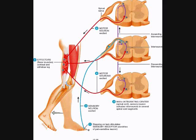The next reflex we're going to talk about is the flexor reflex, also known as the withdrawal reflex. This is a reflex that is polysynaptic and is protecting you from a potentially harmful stimulus. In this picture, this individual has stepped on a tack. That is going to stimulate sensory receptors — specifically nociceptors, which are pain-sensitive receptors. Tissue damage is the stimulus, which will result in your brain perceiving it as pain, causing this reflex arc to initiate.